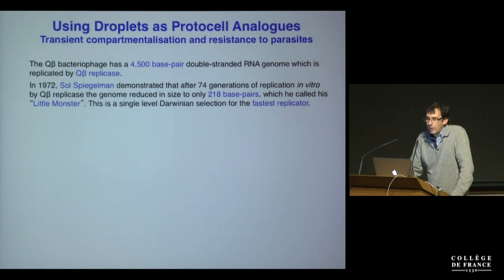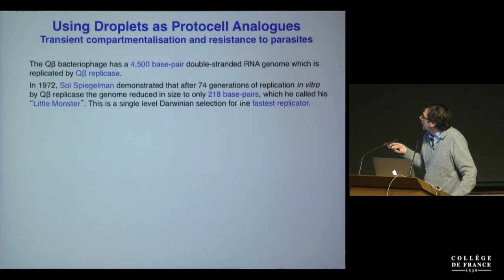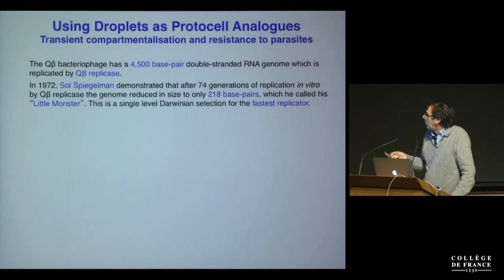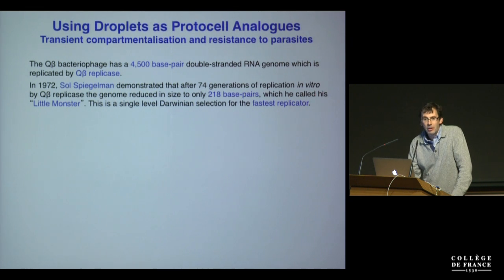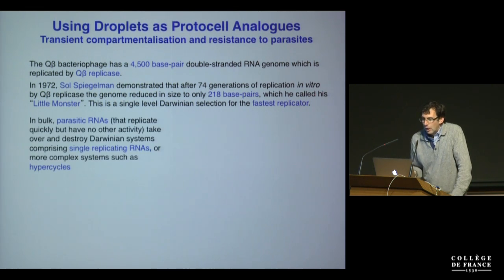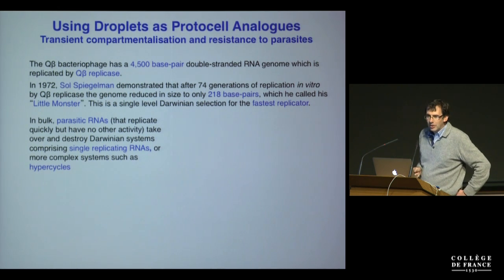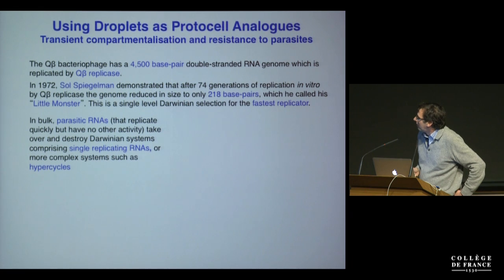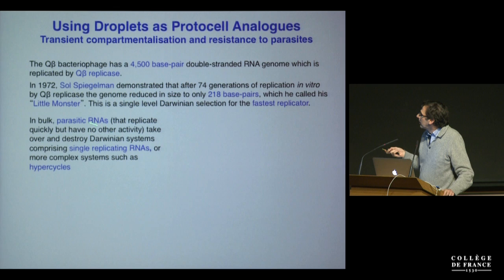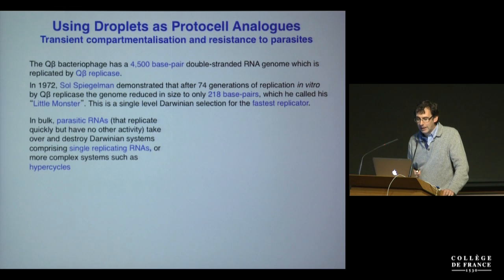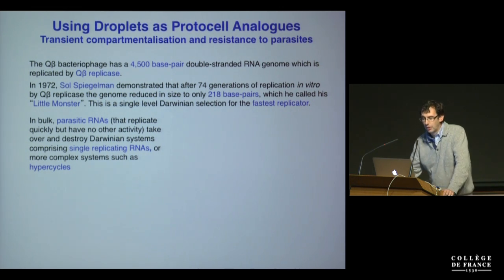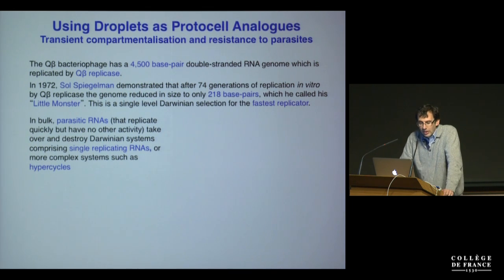Back in 1972, Sol Spiegelman performed a very nice experiment where he took the Q-beta genome through 74 generations of replication, and the genome reduced in size down to 218 base pairs. He called these little RNAs Spiegelman's monster. This is very simple Darwinian selection for RNAs that replicate more quickly. But this demonstrates a quite interesting and slightly disturbing tendency of RNA replicators — in bulk, parasitic RNAs, which are RNAs that replicate quickly but have no other function, are thought to take over and destroy Darwinian systems.